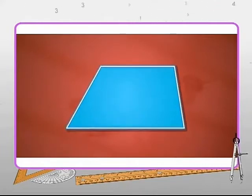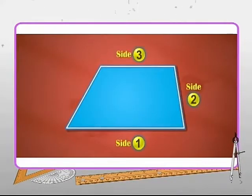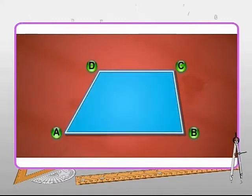To elaborate, a quadrilateral is a plain mathematical figure with four sides and four angles. A quadrilateral is named by taking the vertices in order, either in clockwise or in anti-clockwise direction.